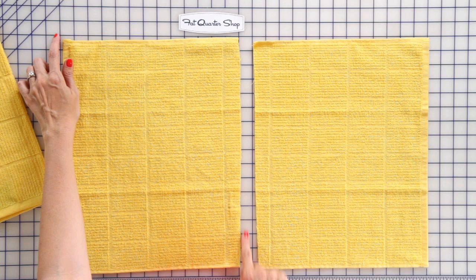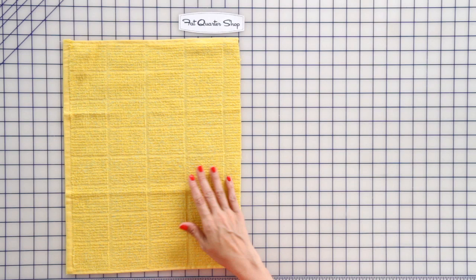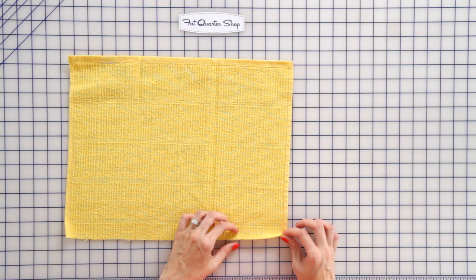To start, take your kitchen towel, open it along the long side, cut the towel in half. We're going to just be using this half now.